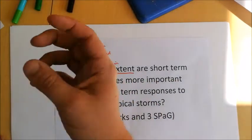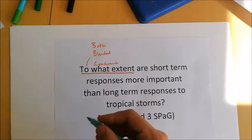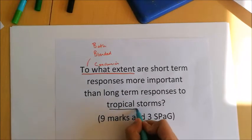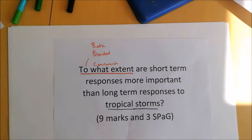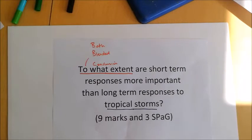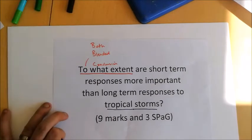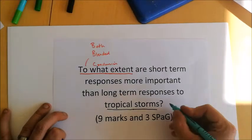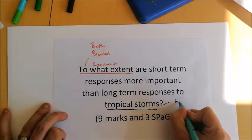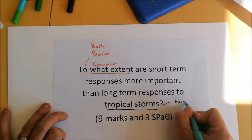It's important to note what the question is actually asking about — tropical storms. You will lose marks if you start talking about responses to earthquakes or volcanic eruptions. The question doesn't specifically ask for a case study, but in geography, particularly in six and nine mark questions, we should always use one when we can. We'll use Hurricane Sandy.